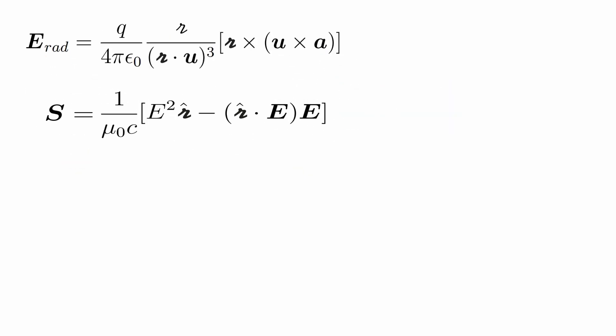From this equation, it is apparent that the field and the direction of propagation are perpendicular. Therefore, the second term of the Poynting vector becomes zero, and the first term remains.